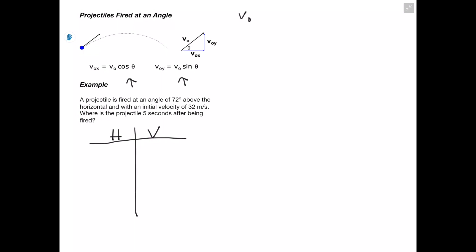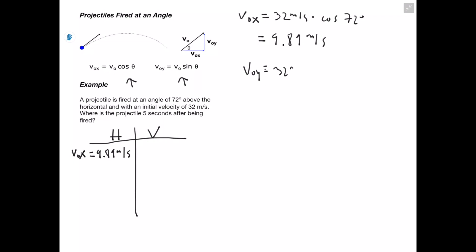To get Vox, we plug in our initial velocity of 32 meters per second times cosine of 72 degrees, giving Vox equals 9.89 meters per second. For Voy, we use the same equation but with sine instead, because we're dealing with the vertical component. That gives us Voy equals 30.4 meters per second.